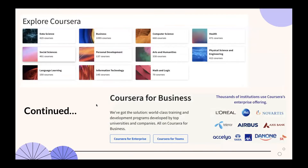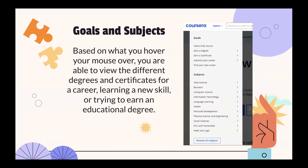Continuing to scroll down, it breaks things into the 11 subjects just mentioned. There's also Coursera for Business. Based on what you hover your mouse over, you can view different degrees and certificates for a career, learning a new skill, or earning an educational degree — like taking a free course, earning a degree, or earning a certificate.